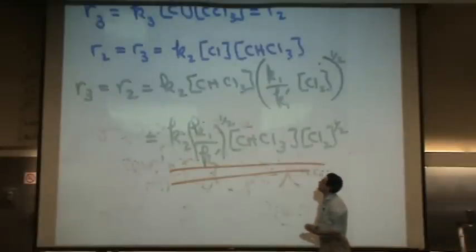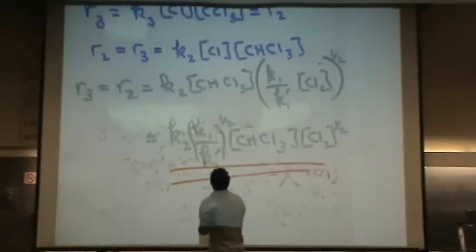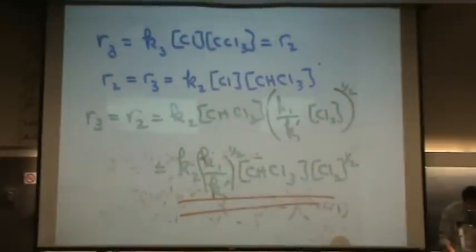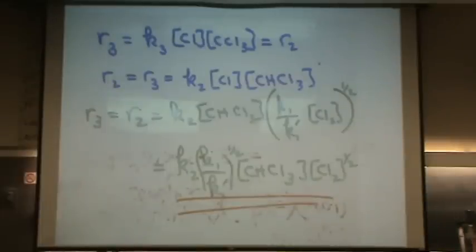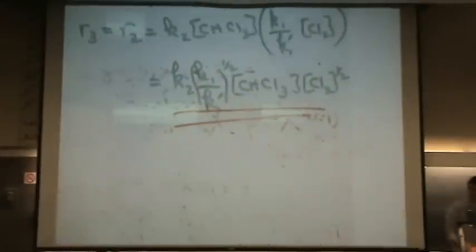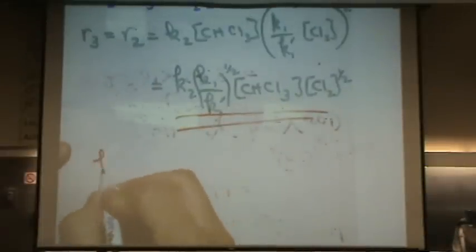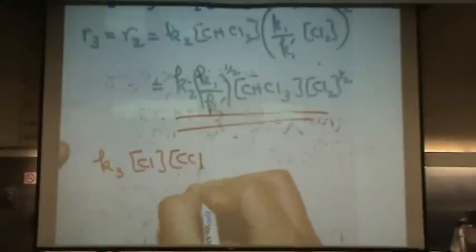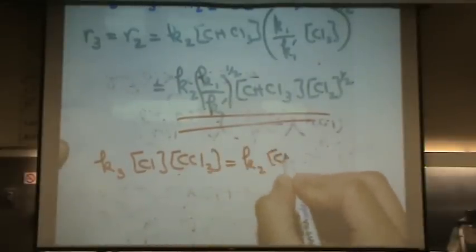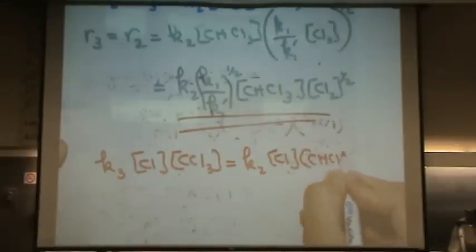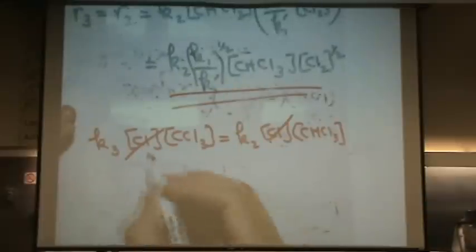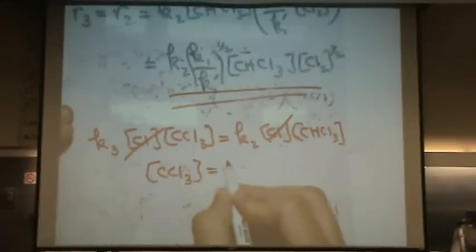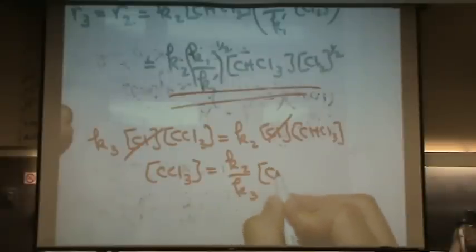Why didn't I set these two equations equal to each other, the Cl cancels, and then solve for CCl3? Is that what you're asking? Yeah. You want to try it? She wants to. That's a great idea. Do you want to cancel Cl from both sides? I'm going to solve for CCl3. Is that right? CCl3 equals K2 over K3 CHCl3. Am I going along with your idea so far?